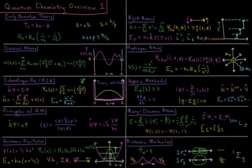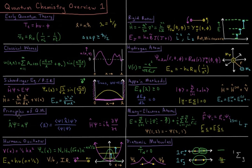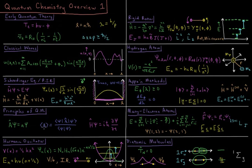Then we move on to the general principles of quantum mechanics, starting with the postulates of quantum mechanics, from which all other ideas in quantum mechanics can be derived. These include: the wave function containing all information needed to calculate any property of the system; every physical observable being represented by a quantum mechanical operator; and the only measurable values being the eigenvalues of those operators. We can get average values via expectation value integrals, and the Schrödinger equation tells us how the wave function evolves in both space and time.